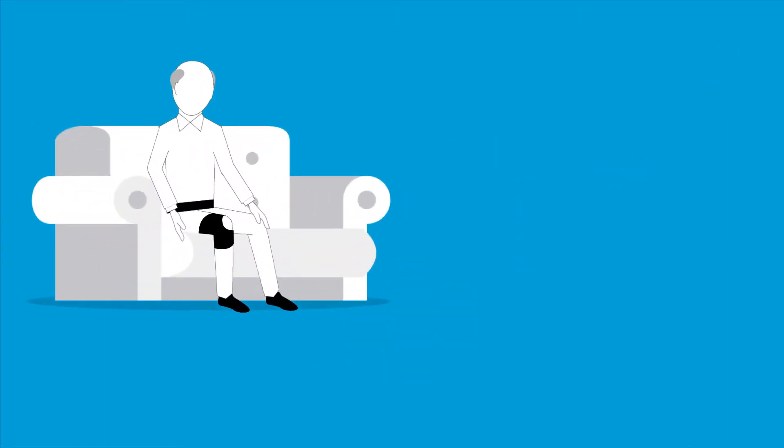Take 88-year-old Joe. Joe suffers from arthritis in his knees and arrhythmia, but thanks to smart textiles, he can stay at home.